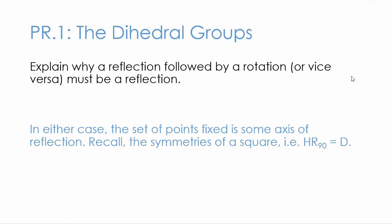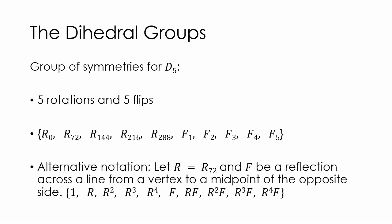Okay, did you come up with something like this? Guess that in either case the set of points fixed is some axis of reflection? If not, don't worry. This is not important. If it makes your head hurt, don't panic. Just remember that we've seen examples of this. Remember the symmetries of a square. We know that if we took a square and we flipped it horizontally and then rotated it 90 degrees, it would be the exact same thing as if we just did a diagonal flip, a flip along the diagonal axis, the line from one corner to the other.